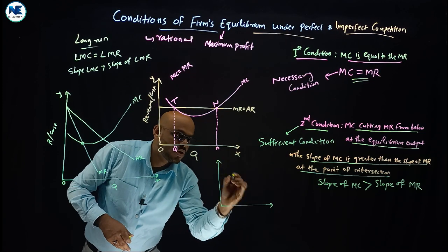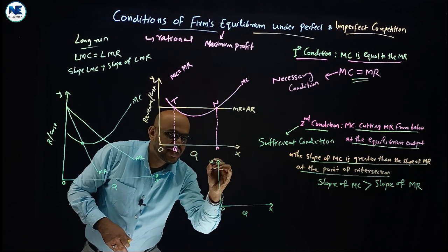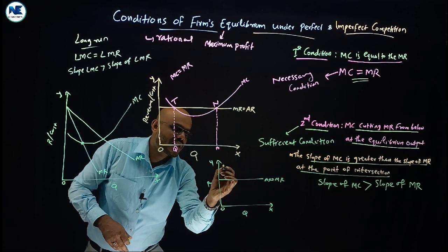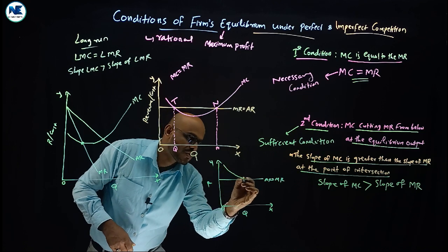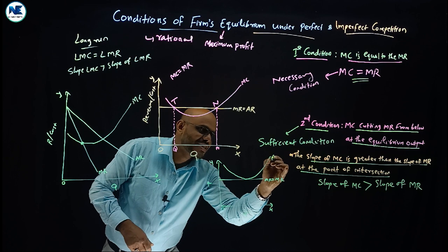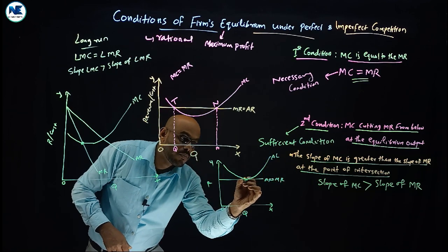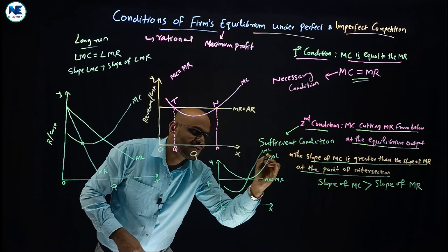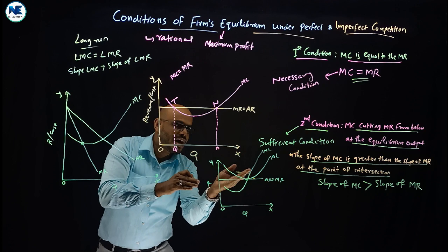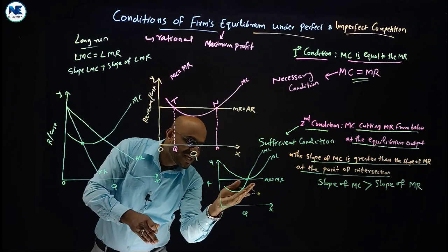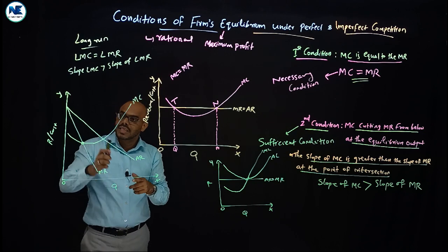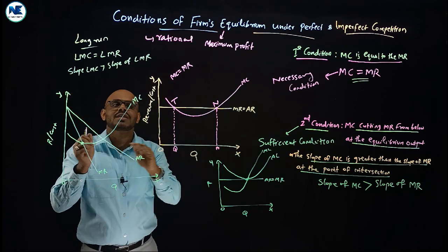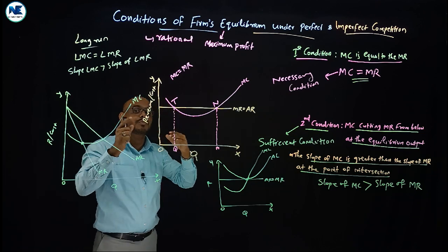Under perfect competition, on the x-axis take Q, on the y-axis take revenue and cost. Where AR equals MR we have normal profit — this is where average cost is relevant. The marginal cost curve passes through the minimum point of the average cost curve. If average cost is above, the firm makes a loss; if below, it earns abnormal profit. This will be discussed in detail in separate videos for each market structure.